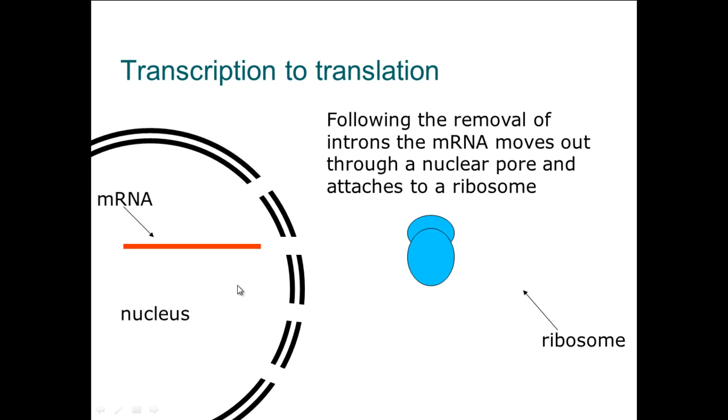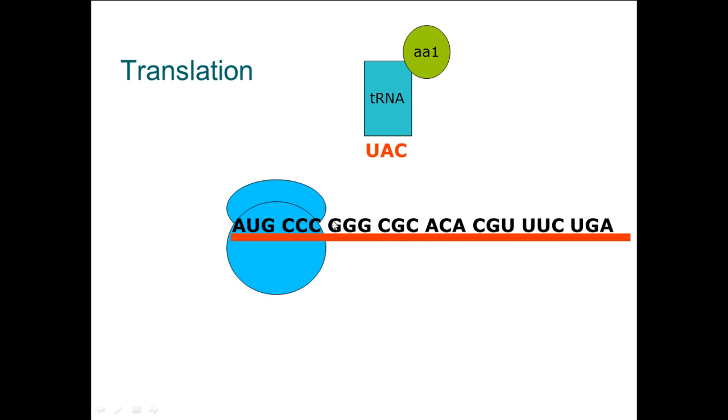A ribosome is actually the organelle that builds the protein. As the mRNA moves out of the nucleus, it moves towards the ribosome, represented by this blue structure here.